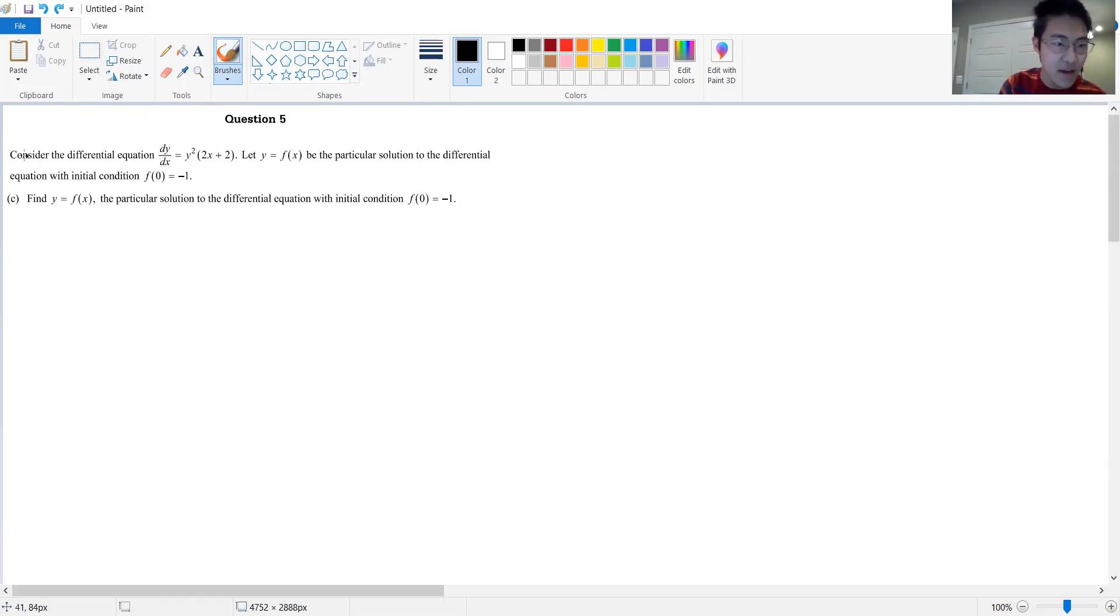Okay, so in this case, dy dx is equal to y squared times 2x plus 2. And so what we do is we want to separate the variables. And actually, in any free response AP question, this is incredibly important. If you do not show that you separate the variables at all, then they can give you zero credit for the entire part. So you don't want to miss that because there's five points here that are possible to score.